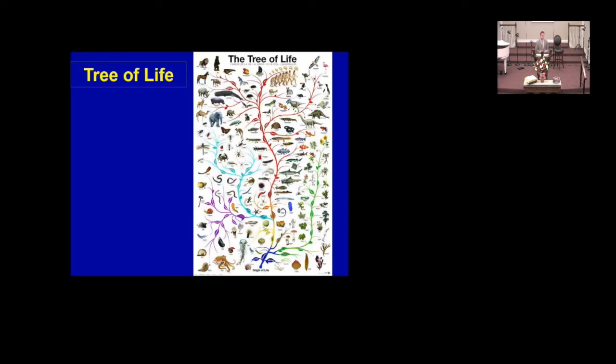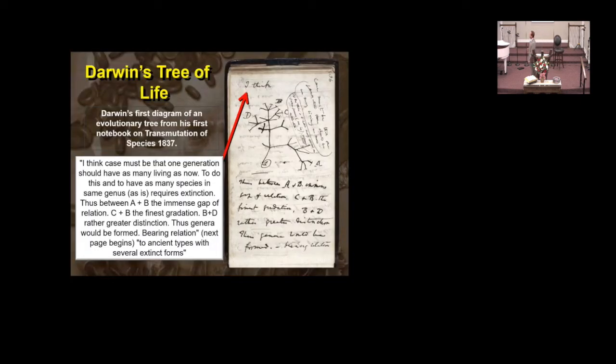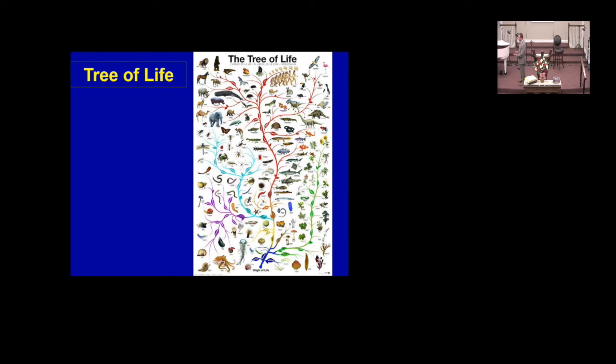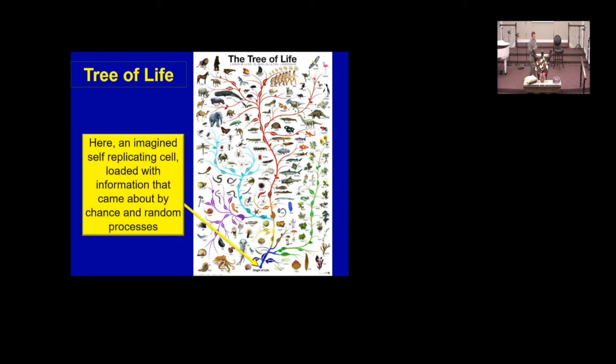This is what the real tree of life looks like, not like this little stick figure. If you're going to tie all this together, you're going to have to tie together a starfish with a trilobite, with a crab, with a dragonfly, with an elephant, with a butterfly, with a kangaroo. And you've got to have all the information for that next phylum. You've got to have that self-replicating, loaded with information cell to ever get this imaginary tree of life started.